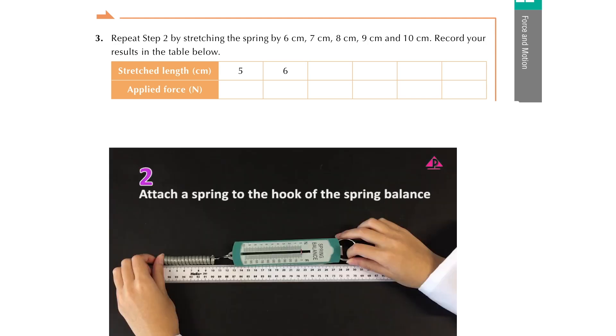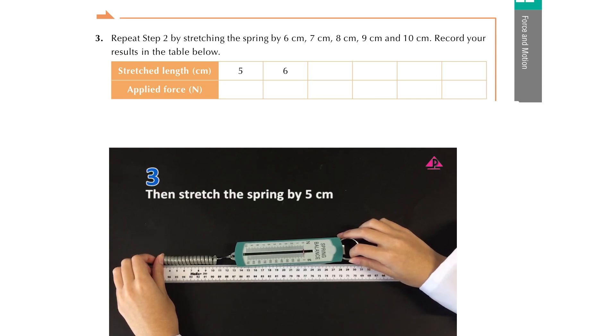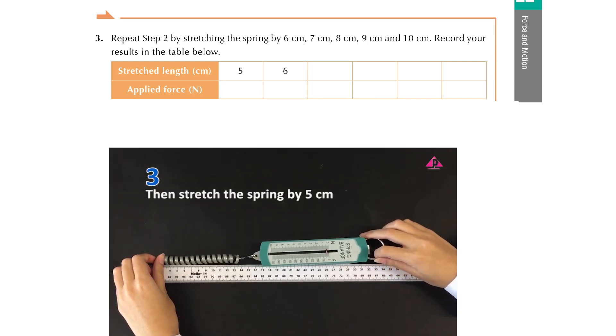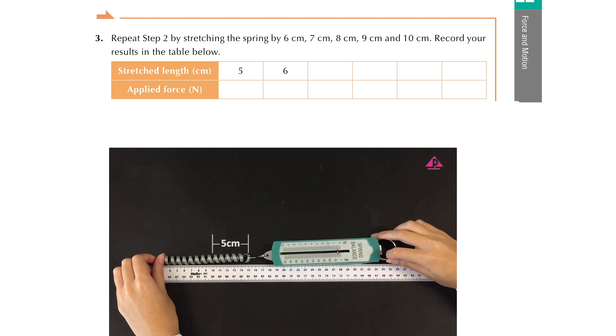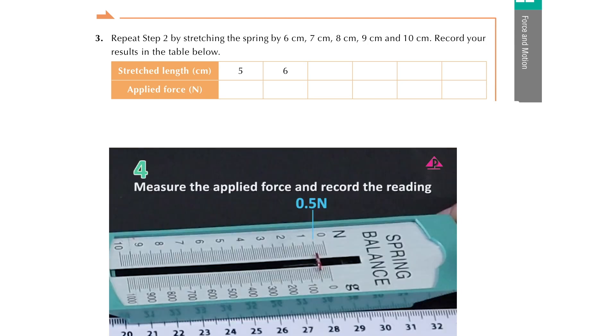Attach a spring to the hook of the spring balance. Then stretch the spring by five centimeters. Measure the applied force and record the reading.